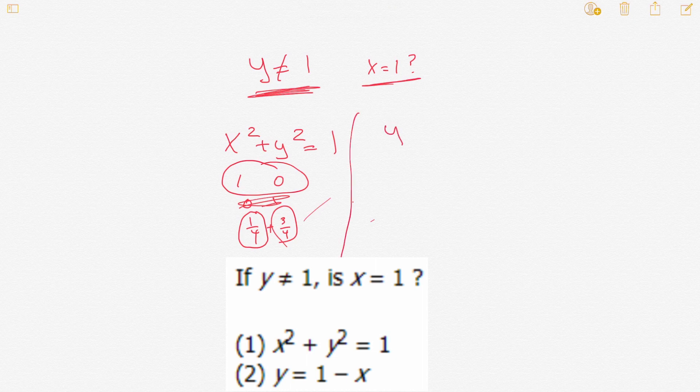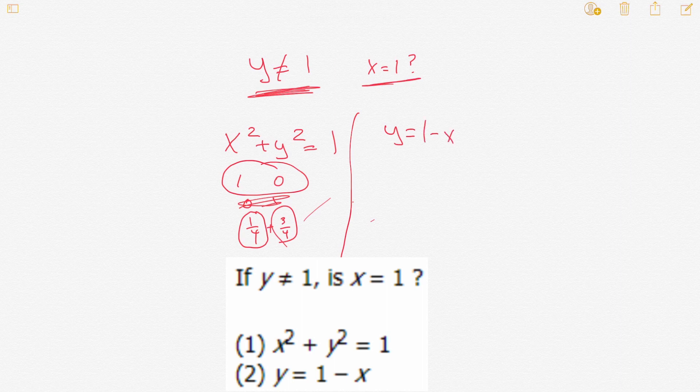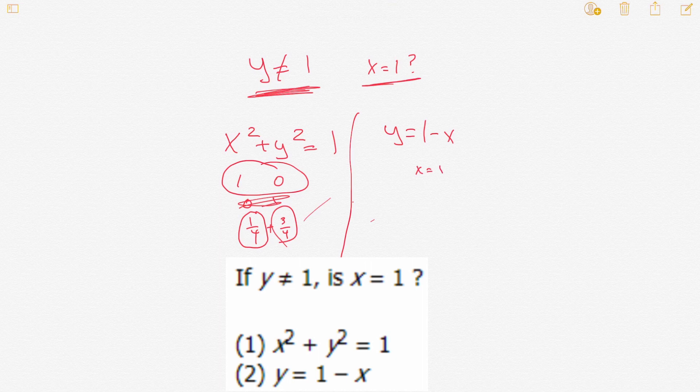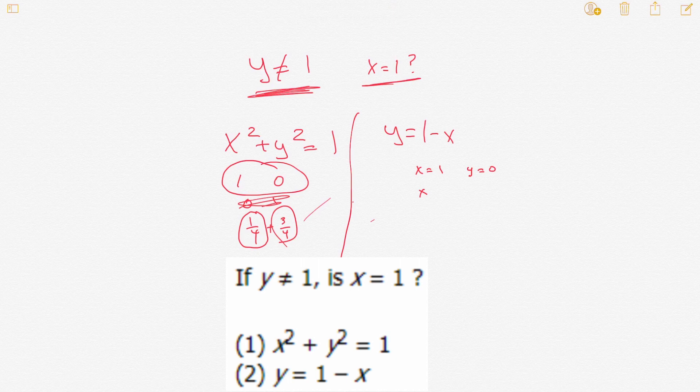Now let's try number two. Number two says y equals 1 minus x. Now by itself, that wouldn't be sufficient, because for example, x could equal 1, and then y would equal 0. But again, x could equal one half, and if that's the case, then y could equal one half, right?